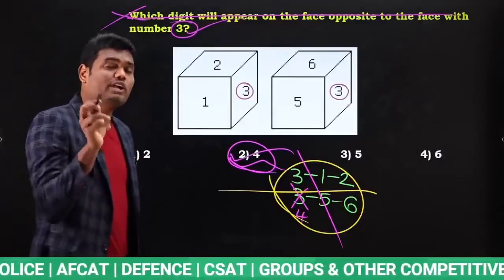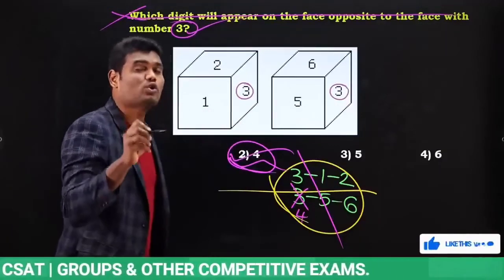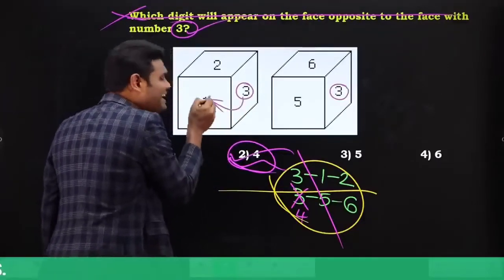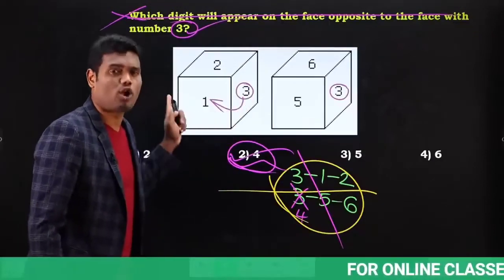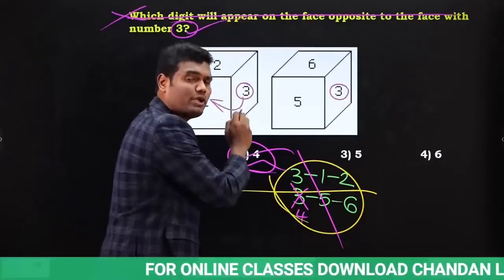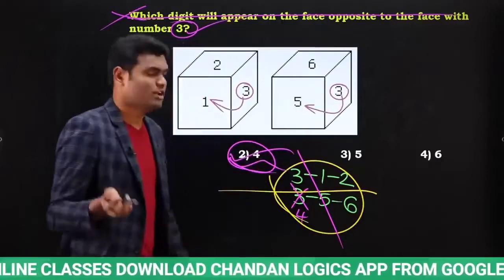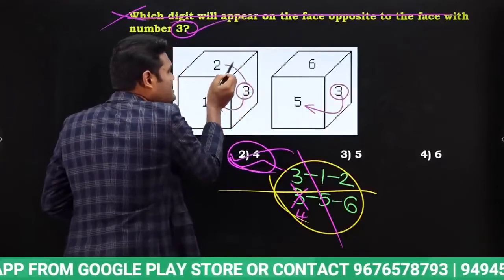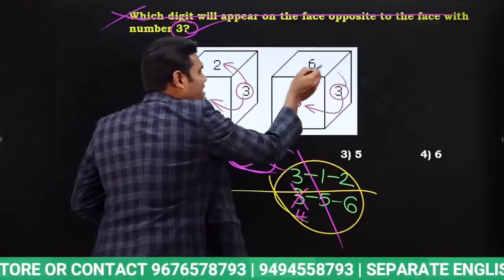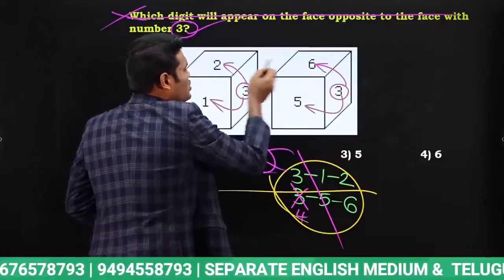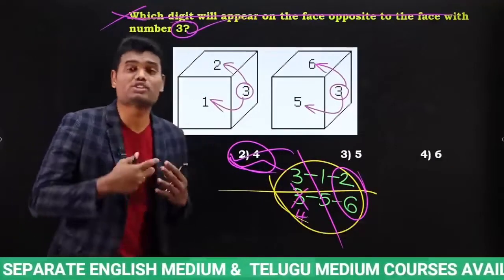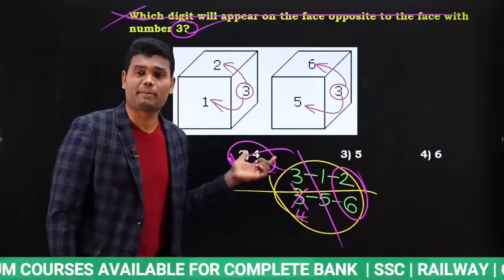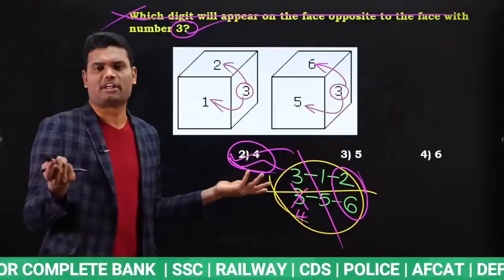If you want to know what is opposite to 1, look here. With respect to the common element 3, where is 1? With respect to 3, one is in immediate clockwise. Whatever you do here, the same you have to repeat in the other view. With respect to 3, immediate clockwise is 5. So 1 opposite is 5. If you need to know what is opposite to 2: with respect to 3, two is in immediate anti-clockwise. Check immediate anti-clockwise in the other view — it is 6. So 2 opposite is 6.